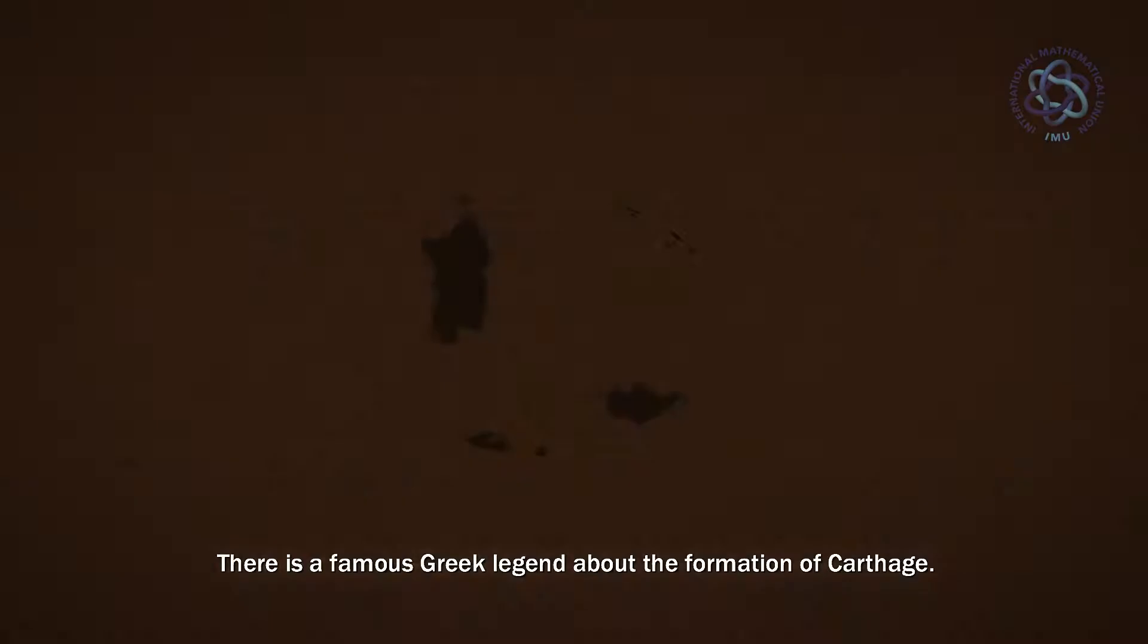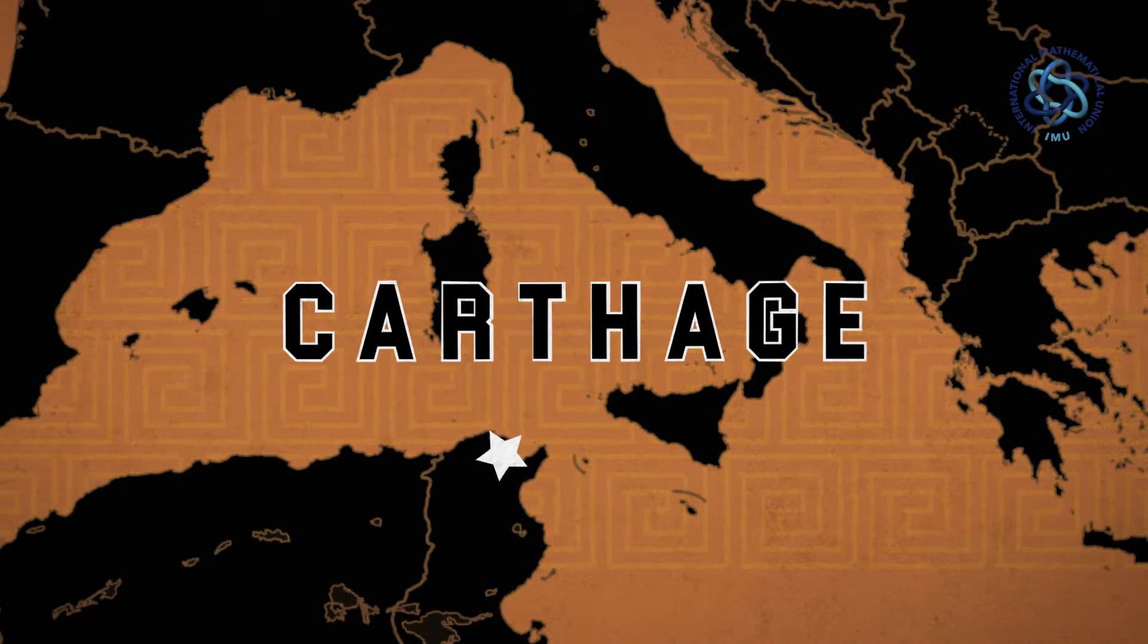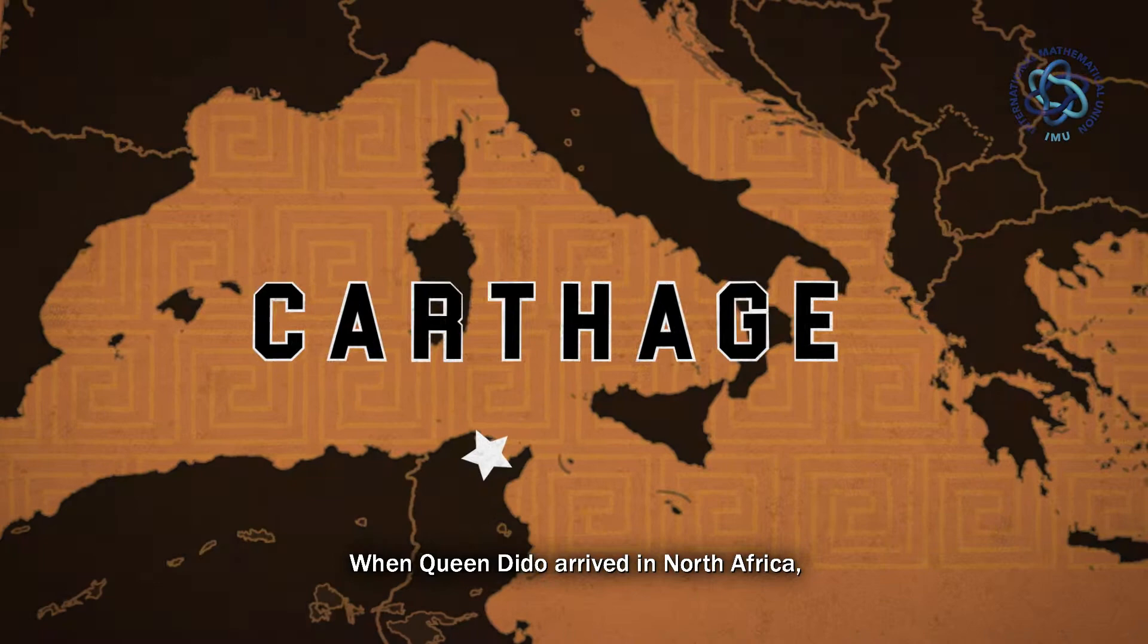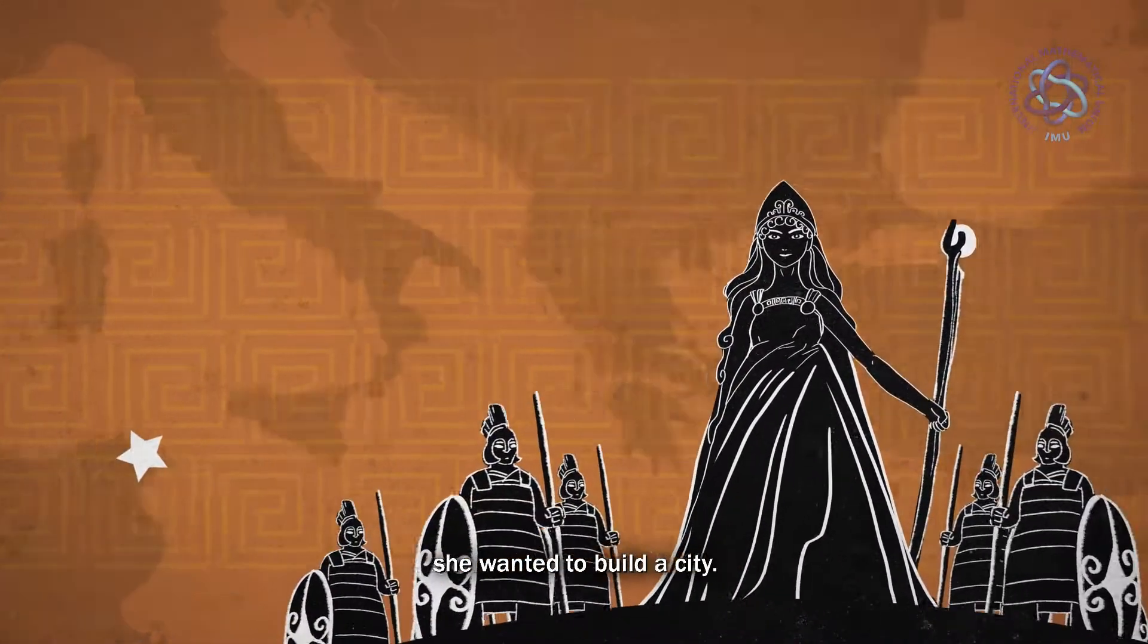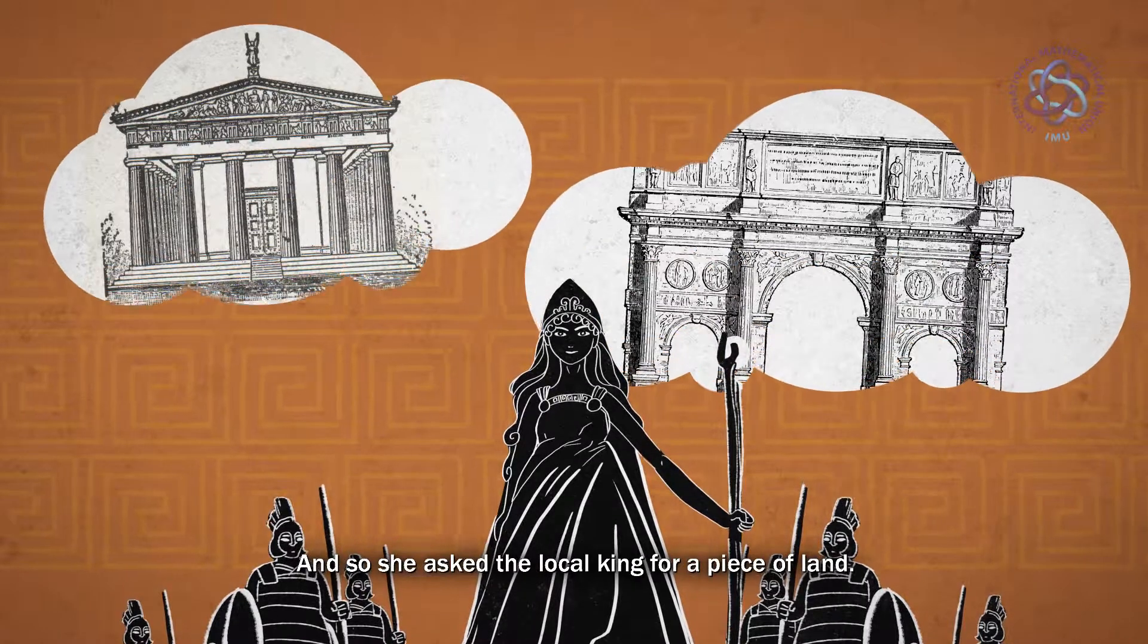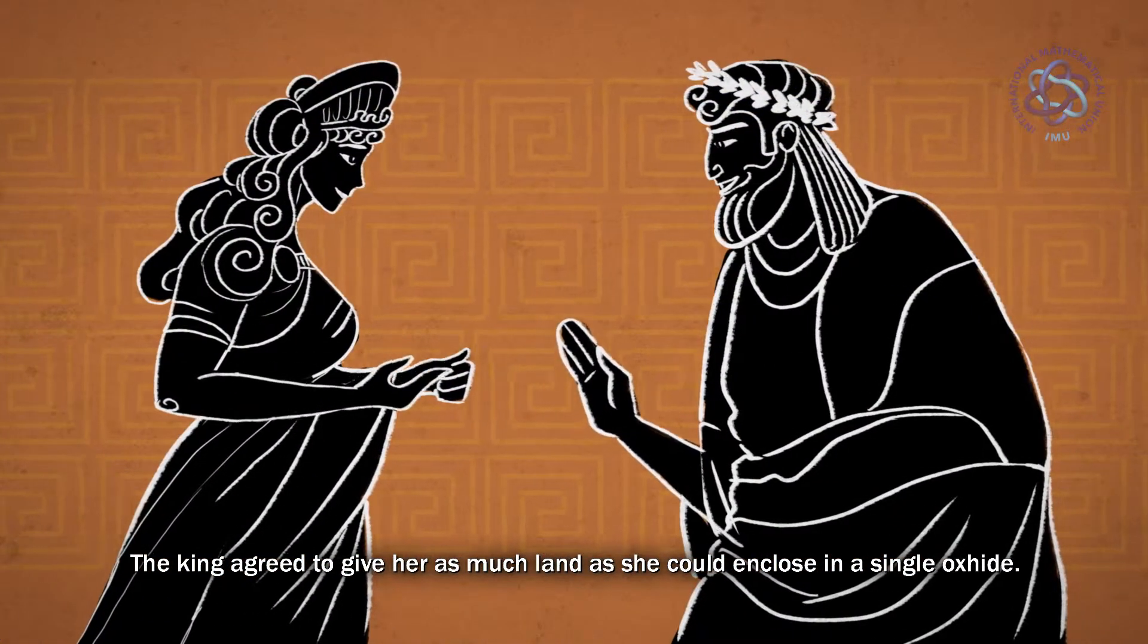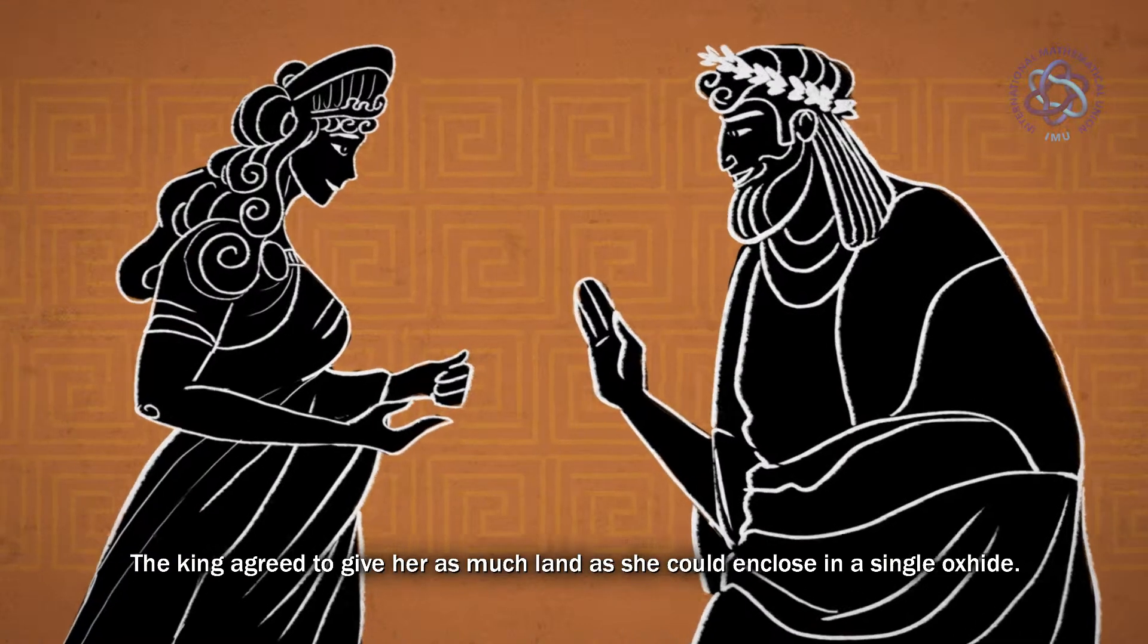There is a famous Greek legend about the formation of Carthage. When Queen Dido arrived in North Africa, she wanted to build a city. And so she asked the local king for a piece of land. The king agreed to give her as much land as she could enclose in a single oxhide.